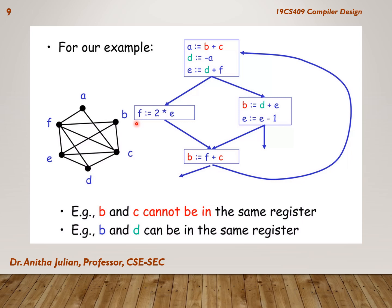When F is assigned to E, F and E are different so we connect them. For B = D + E, B and D are not connected since D is reassigned to B, but B and E are connected because E is immediately used. When we come to B = F + C, B and F are connected, B and D are connected, and B and C cannot be in the same register since we are adding both. By drawing the register interference graph, we get an idea of which variables can share registers.